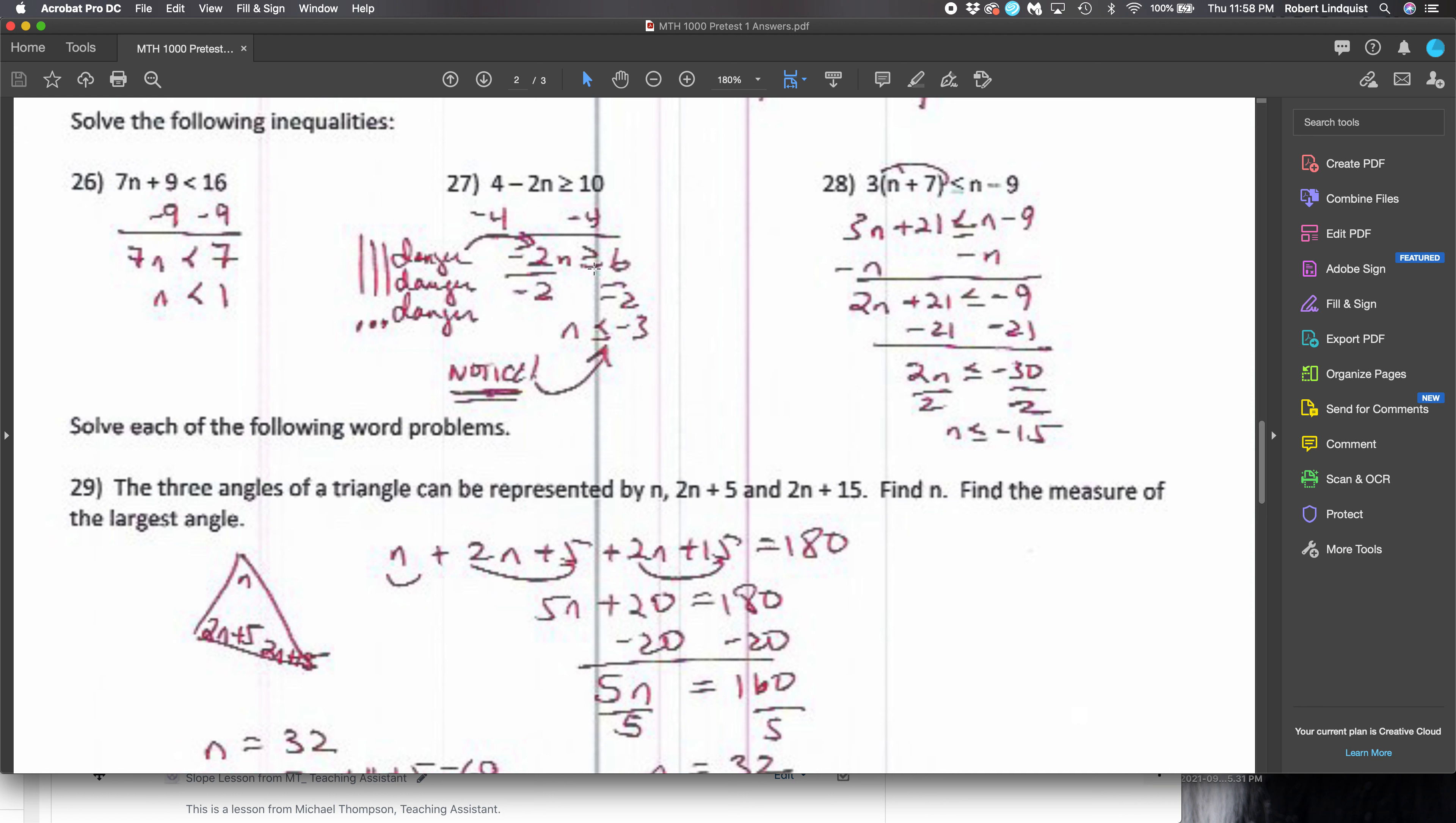Divide by negative 2 and I have to switch the direction of the inequality. Whenever you multiply or divide by a negative you switch the direction of inequality. I get n is less than or equal to - not greater than or equal to - less than or equal to negative 3.